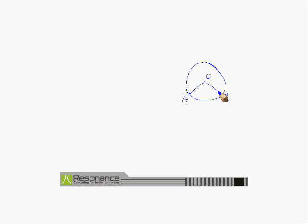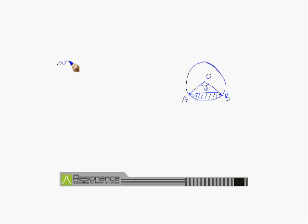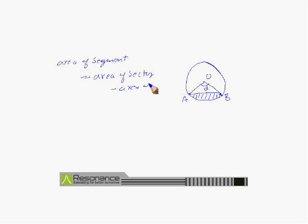We join the two points A and B to the center of the circle, and the angle formed is called the central angle. When we join the two points by a straight line, it is called the chord of the circle AB. The region between the arc and the chord AB is called the segment of the circle.